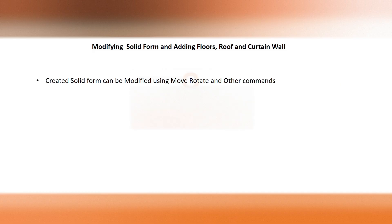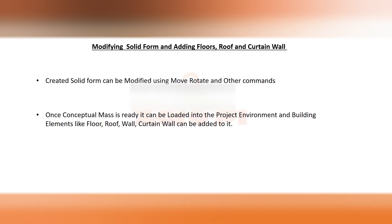Once the solid form is created it can be modified using move, rotate and other commands. Once you finish the conceptual mass then it can be loaded into the project environment and then we can add the building elements like floor, roof, wall and curtain wall. So let's switch to Revit and see how we can create this.